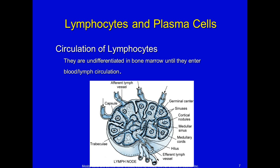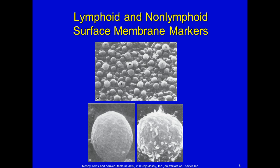Secondary lymphoid tissue also includes skin-associated lymphoid tissue, the thoracic duct, and blood. When lymphocytes are undifferentiated in the bone marrow, that's where they hang out. When they come into the blood or lymph circulation, they become exposed, get a role in life, and will travel through the lymph system until needed. Here's a picture of a lymph node.